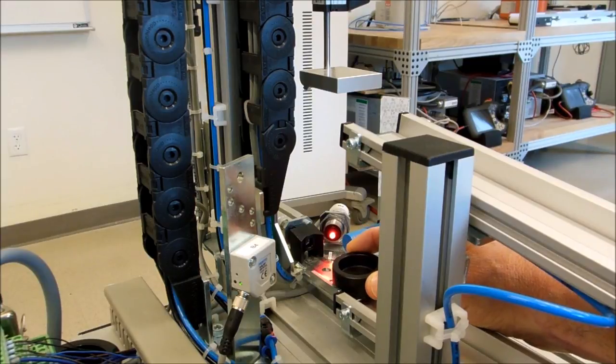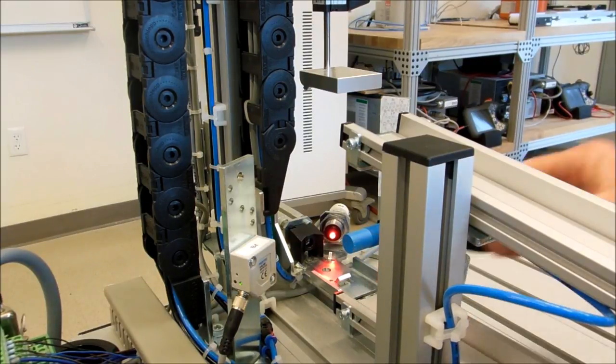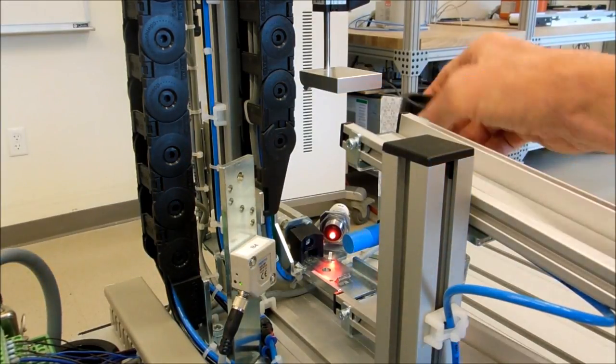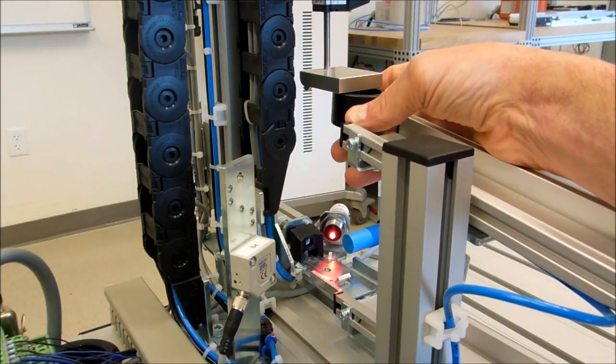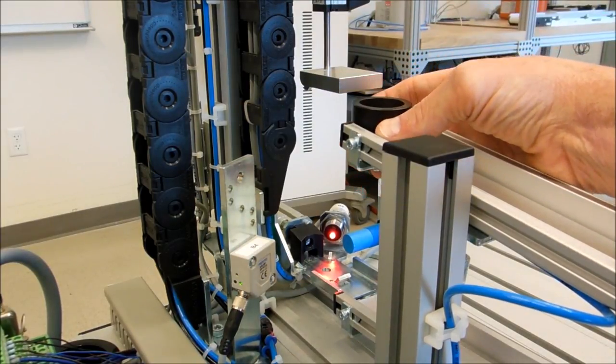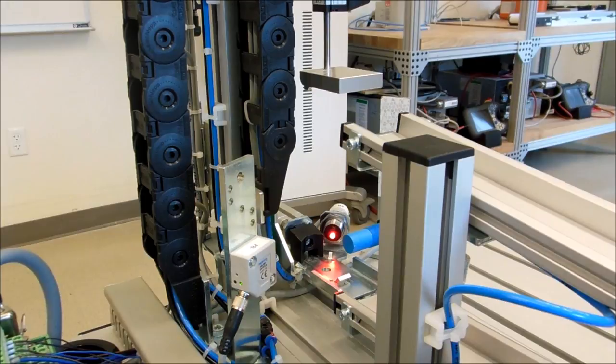Then it gets pushed by the actuator onto the bad track. Now, if it's a good part, when it goes up, it does sufficiently engage the measurement arm, and then it gets pushed onto this air slide, and it slides onto the next station.